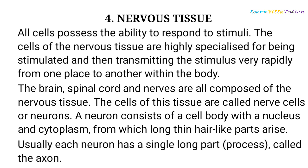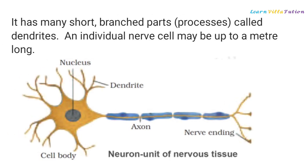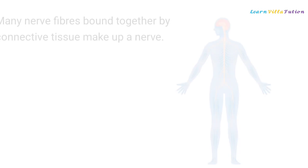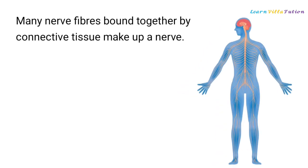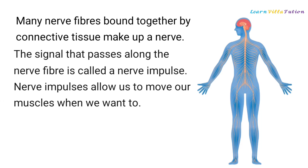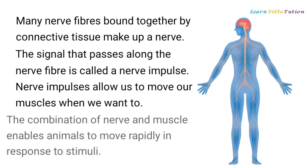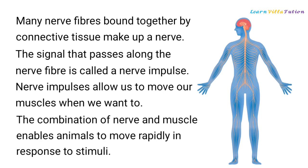Usually each neuron has a single long part called the axon, and many short branched parts called dendrites. An individual nerve cell may be up to a meter long. Many nerve fibers bound together by connective tissue make up a nerve. The signal that passes along the nerve fiber is called a nerve impulse. Nerve impulses allow us to move our muscles when we want to. The combination of nerve and muscle enables animals to move rapidly in response to stimuli.